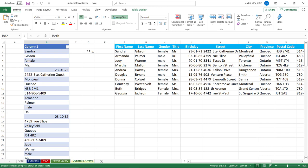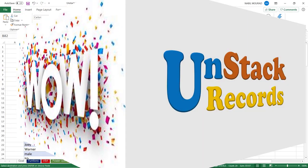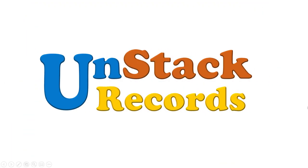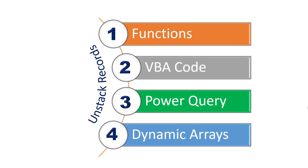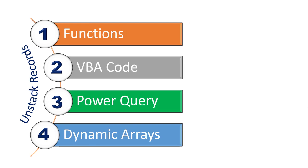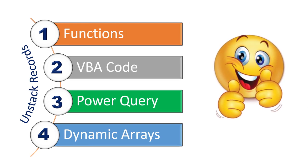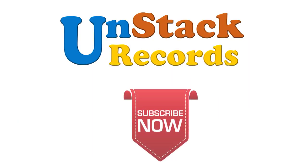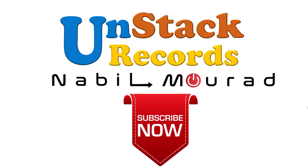In a more advanced scenario, you can simply nest the record count formula directly inside the SEQUENCE function instead of referencing cell D2. I showed you four methods for unstacking records: using functions (INDEX, COLUMNS, MATCH, IFERROR), using a VBA code, using Power Query, and using dynamic arrays. Let me know in the comments which method you prefer. If you enjoyed this training video, give it a thumbs up and consider subscribing to be notified when new tutorials are released. The best is yet to come — thank you for watching and see you next time.